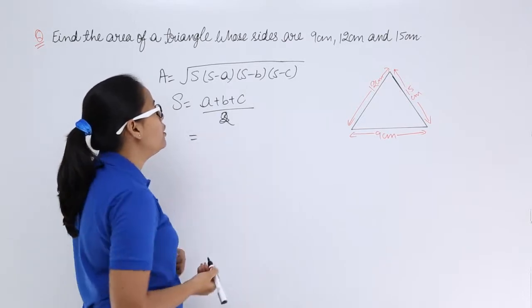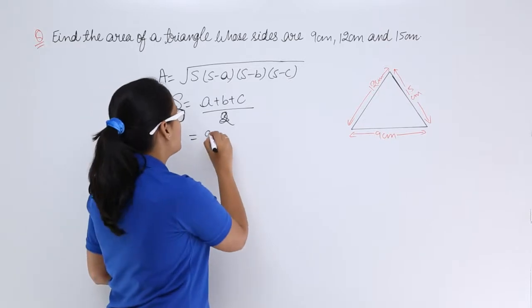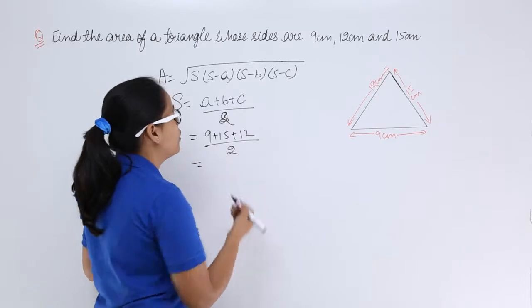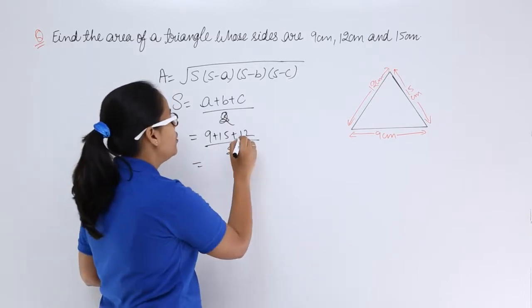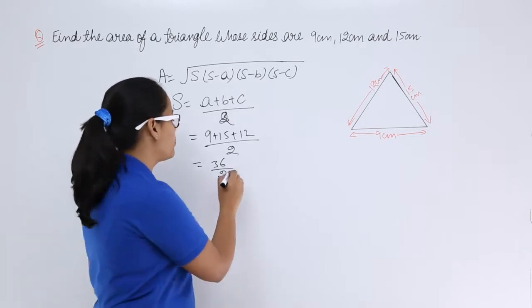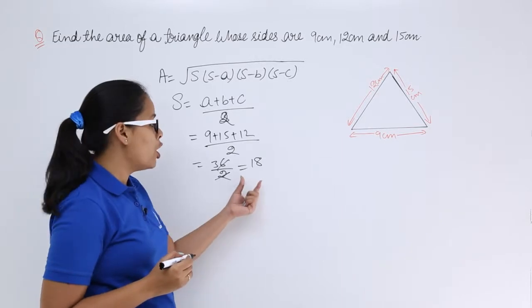So now, let's put all the values for a, b and c which is 9, 15, 12 divided by 2. So what you will get, you will get 36 by 2 and on division you will get 18. So this is the value for semi-perimeter.